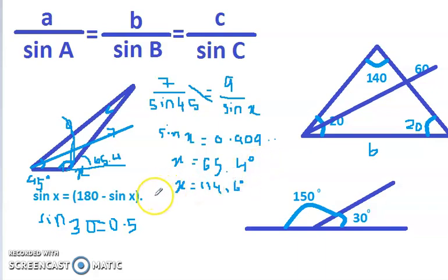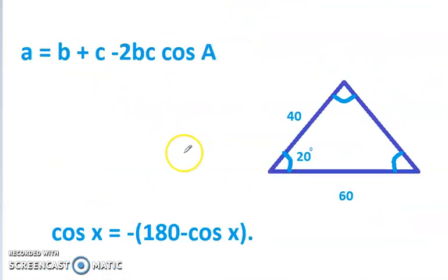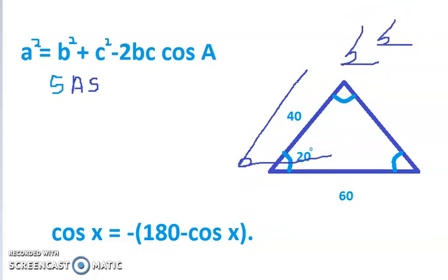Now when we move on to cosine rules. The simple rule of thumb is a squared equals b squared plus c squared minus 2bc cos A. You just need to memorize this formula. So when can this be applied? It's when you have this case satisfied. It's called SAS rule. So you have side, angle, side. Side, angle, side.